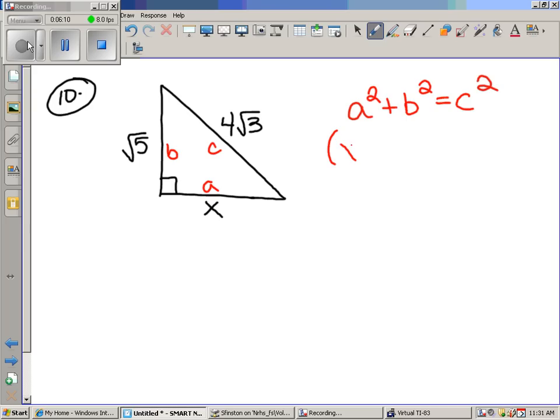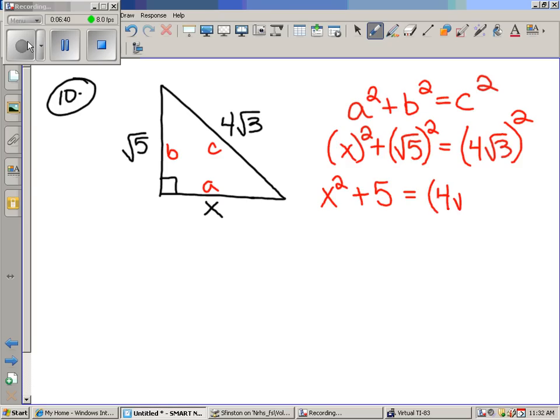Plug all these bad boys in. So we got X squared plus the square root of five squared equals four radical three squared. X squared is just X squared. Radical five squared is just five. Anytime you square a radical, you just get the number underneath. And this, people in other classes also had trouble. Four radical three squared. In fact, four radical three times four radical three, which turns out to be 16 times three. 16 times three is 48.